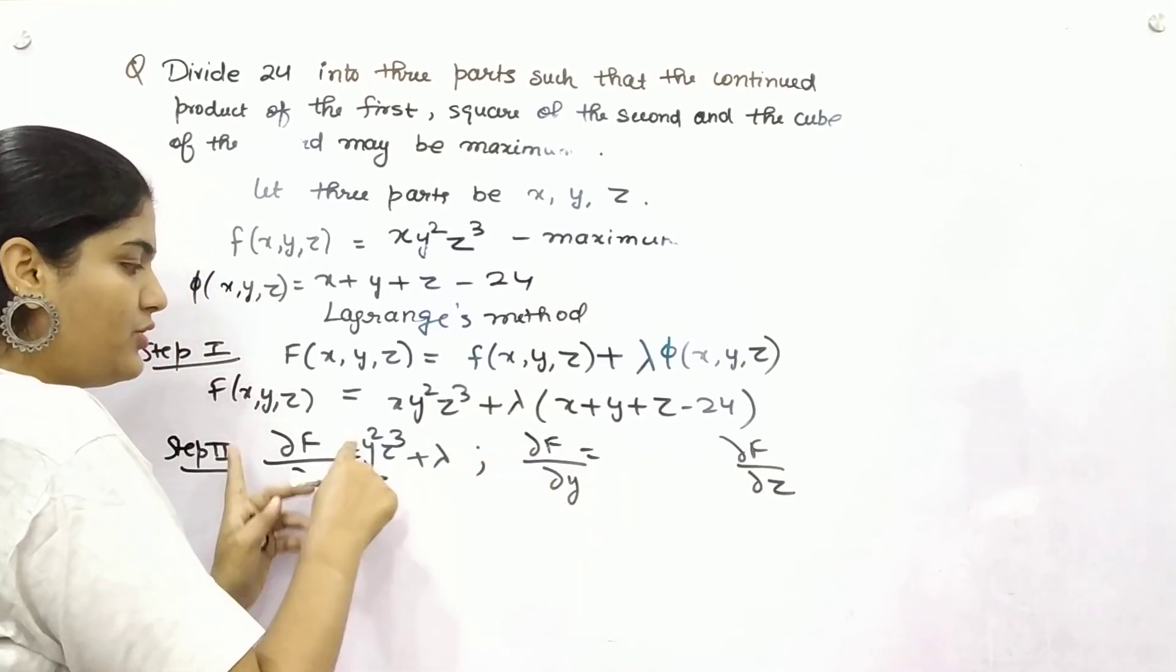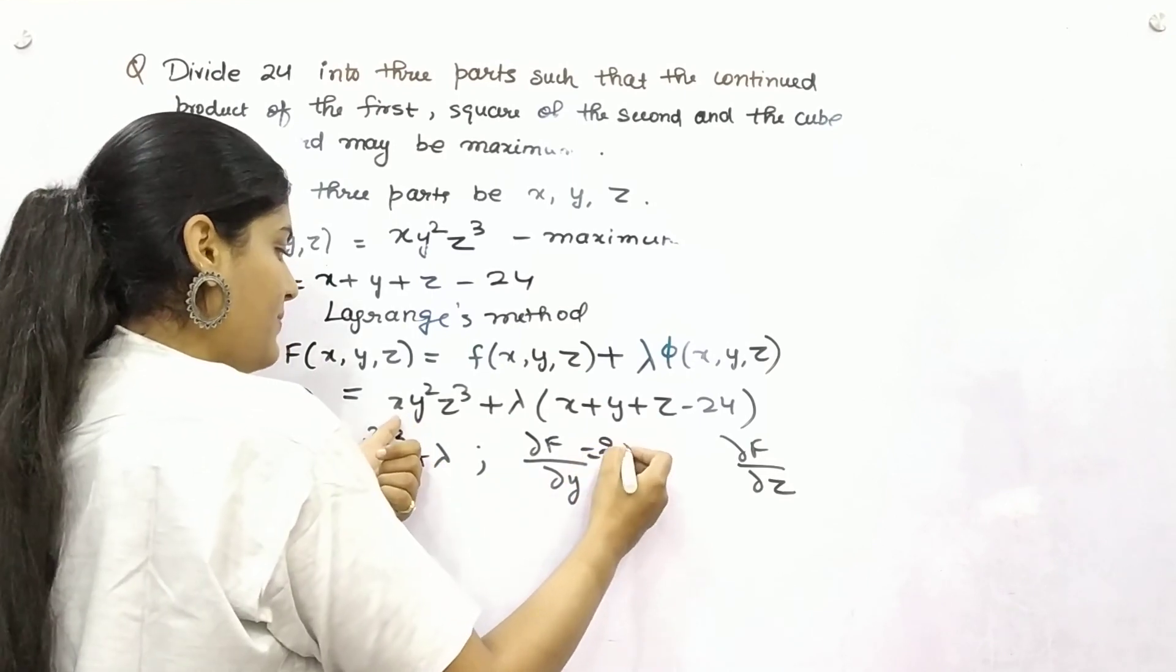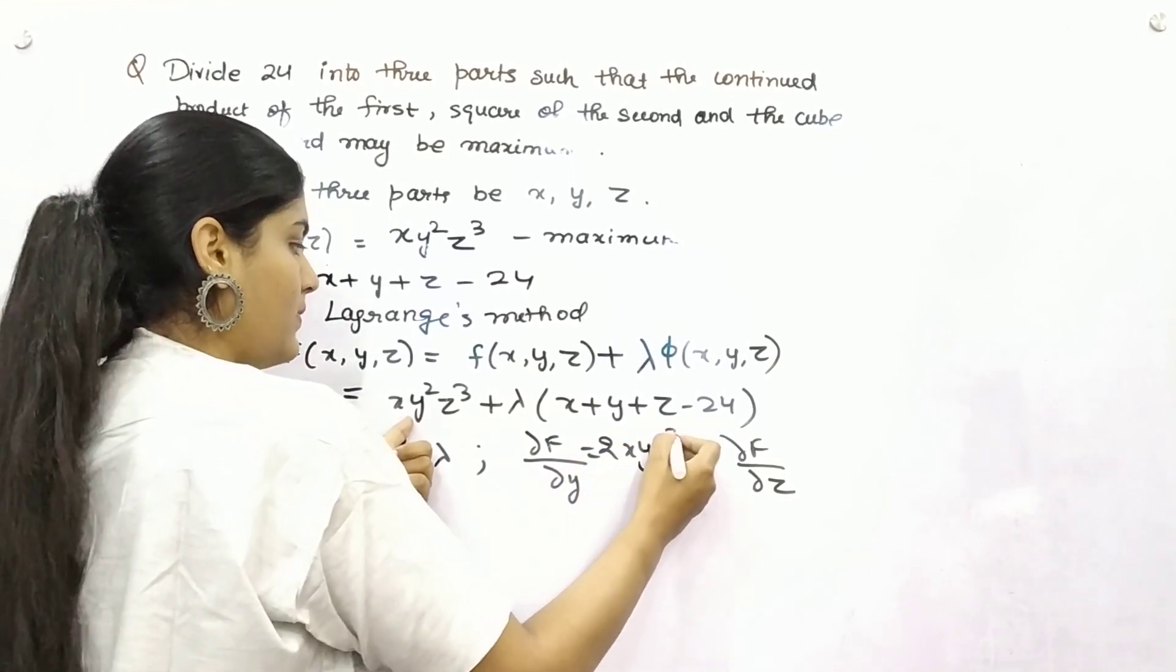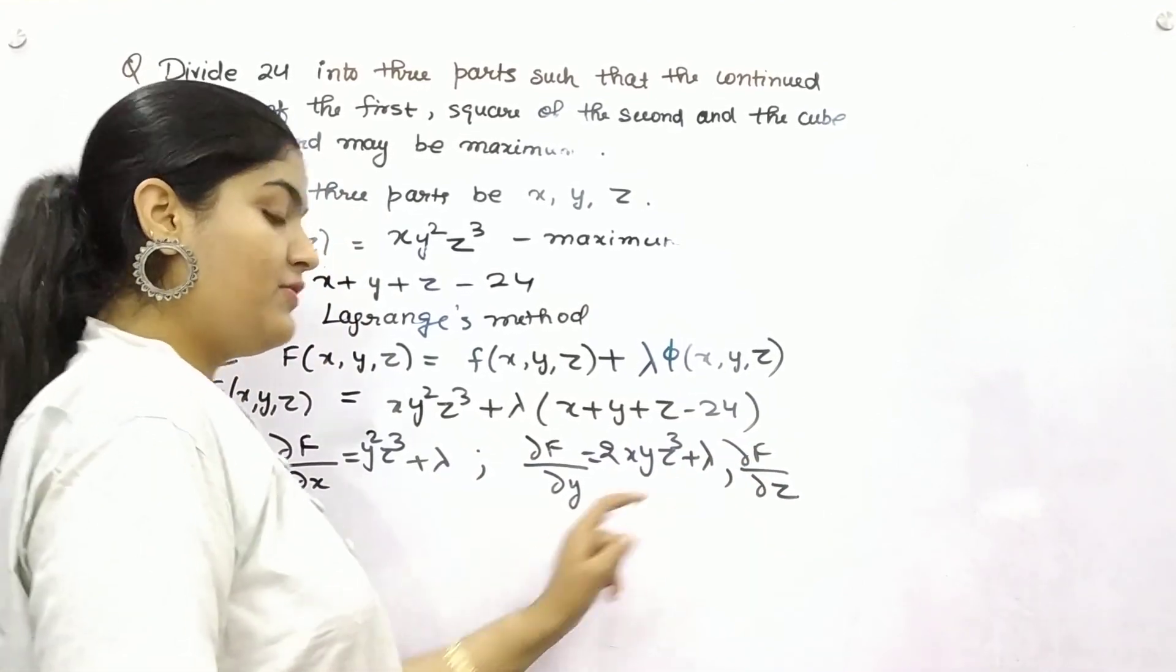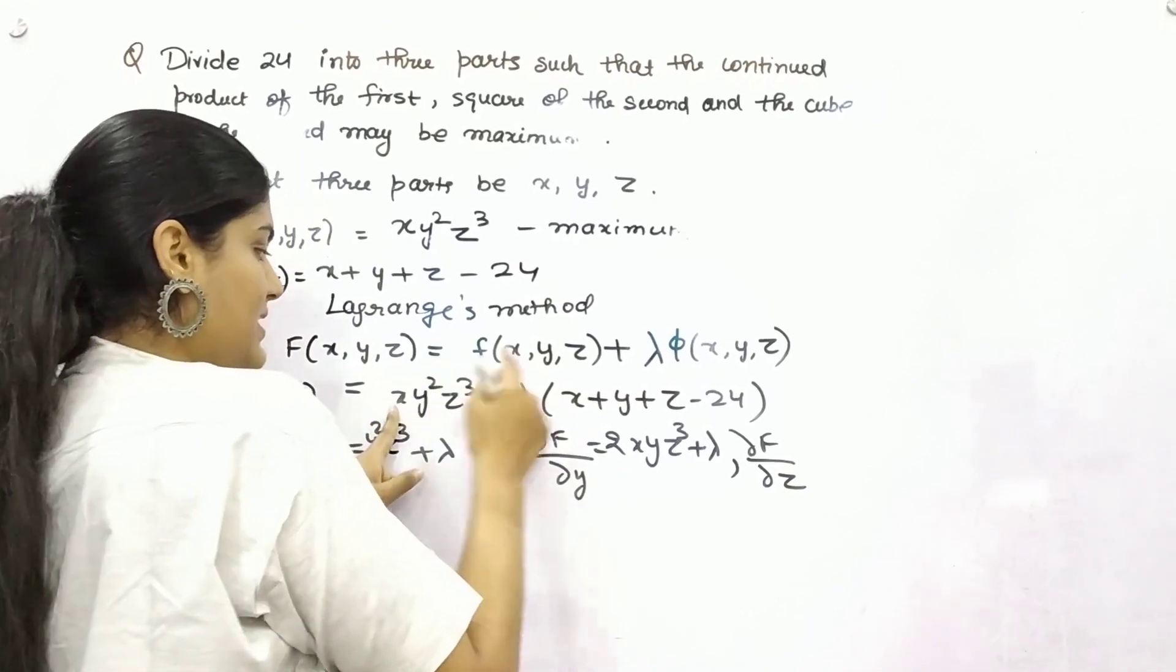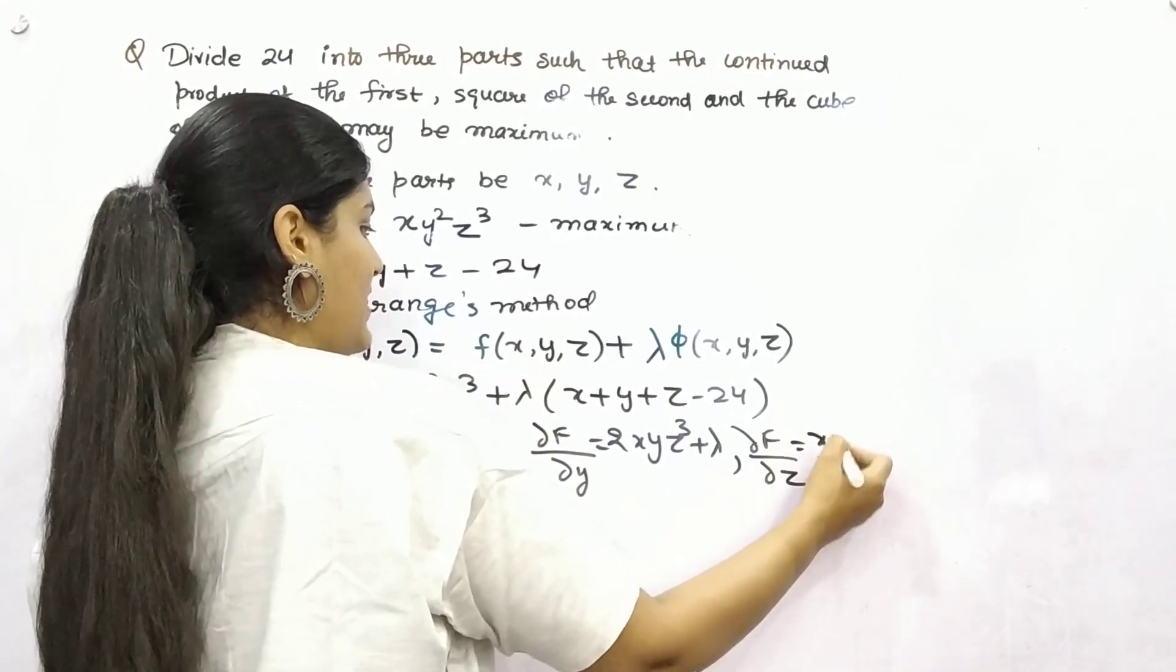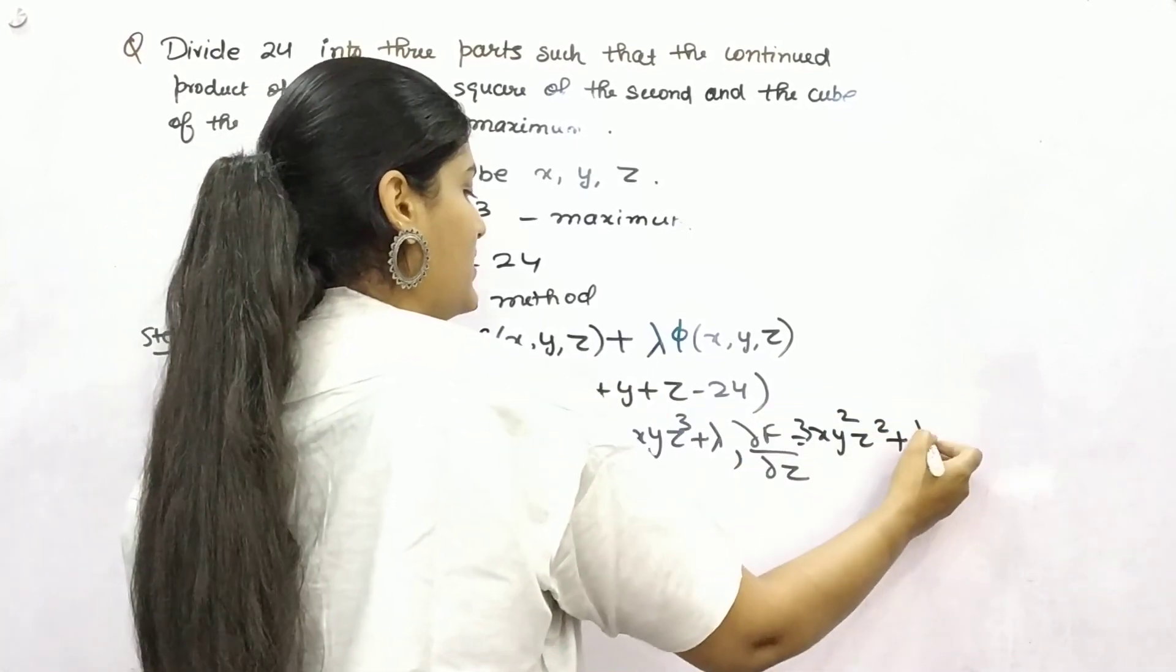For differentiation of function with respect to y, it would be for y², it is 2y. And this would be lambda y, so lambda. Thereafter for z, it would be 3z². So x * y² * 3z² and it is lambda.